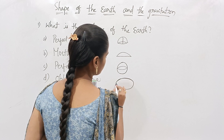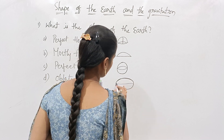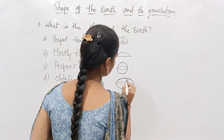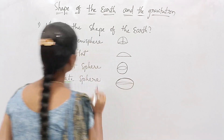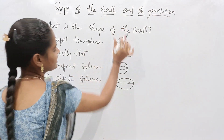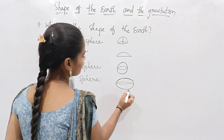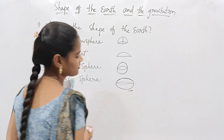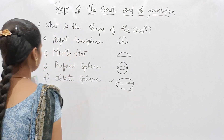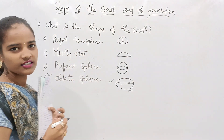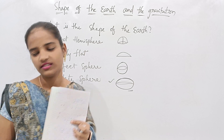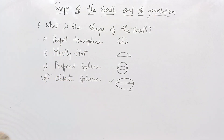We all know that the earth is in the shape of an oblate sphere, so Option D is the correct answer.